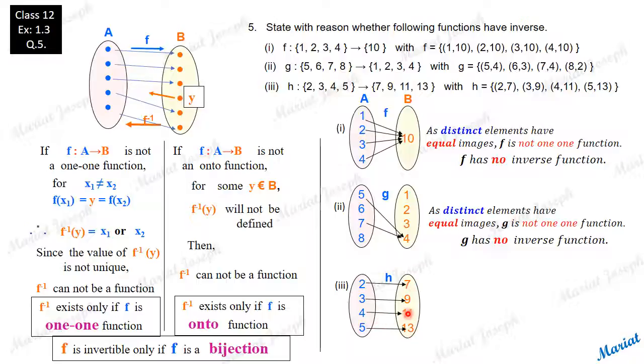One-one because every distinct elements are taken to distinct images. So the function is one-one. And for each y in the codomain, there is an x associated here whose image is the y that you are taking. So it is onto function. So this h function is one-one as well as onto. The function which is one-one and onto is called a bijection. And a bijection is invertible.